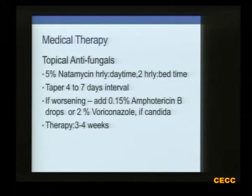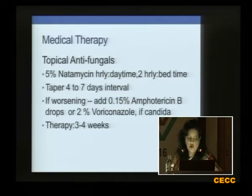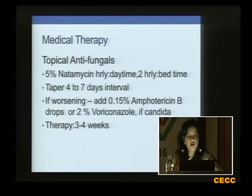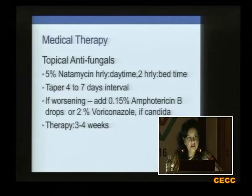The mainstay for fungal keratitis is 5% natamycin, and you taper it after 4 to 7 days if there is a response. However, if there is worsening you can add natamycin fortified or 2% voriconazole. Unlike bacterial keratitis, where response is assessed at 48 hours, for fungal keratitis you assess at 7 days. And while bacterial keratitis responds in 10 to 14 days, fungal keratitis treatment can take as long as 3 to 4 weeks, as fungus is always late in responding.